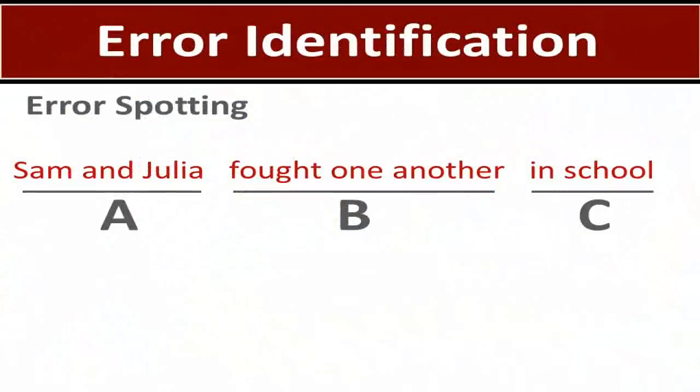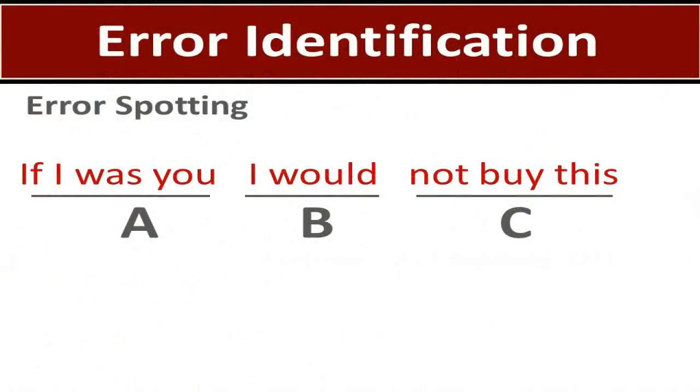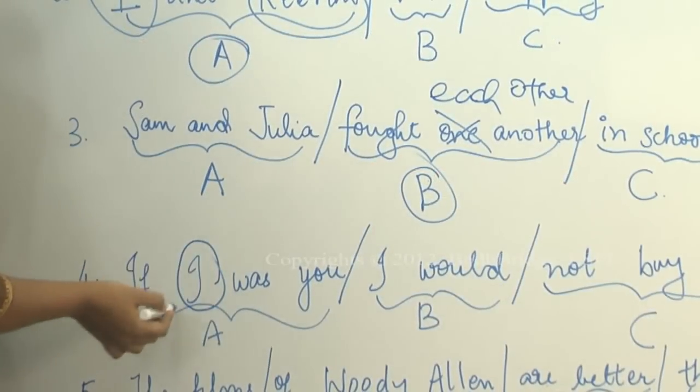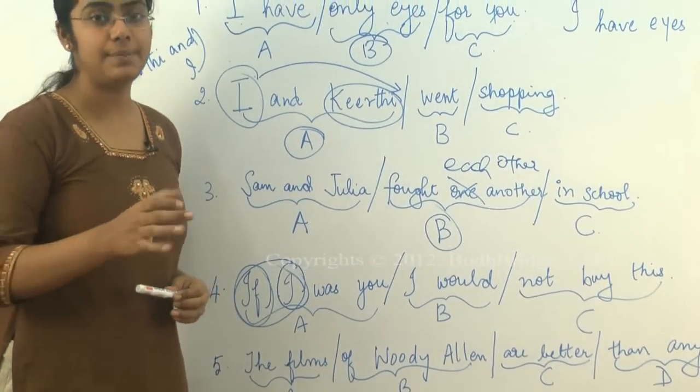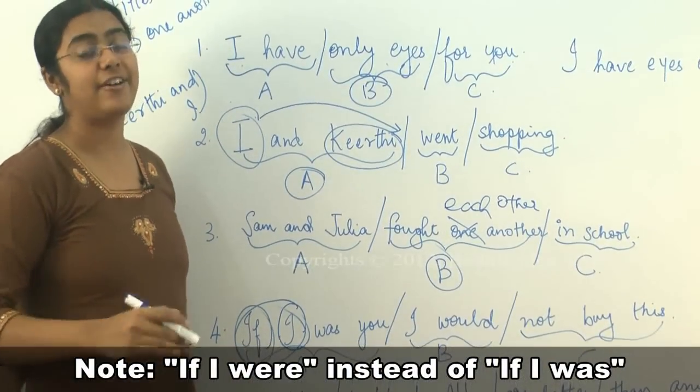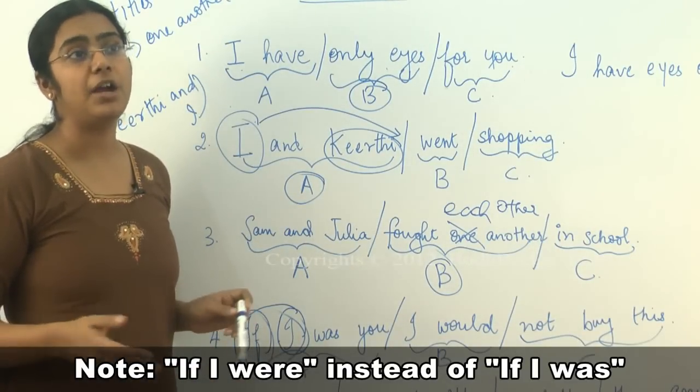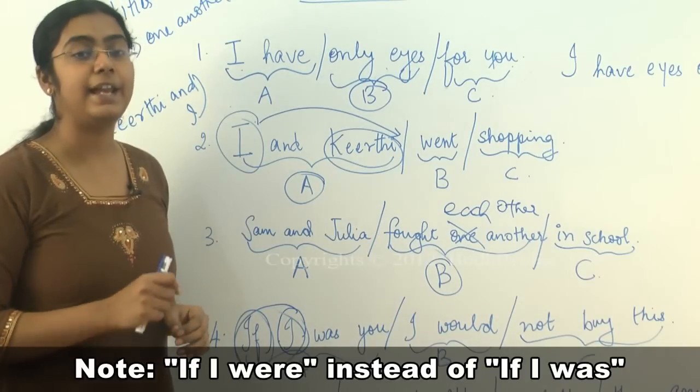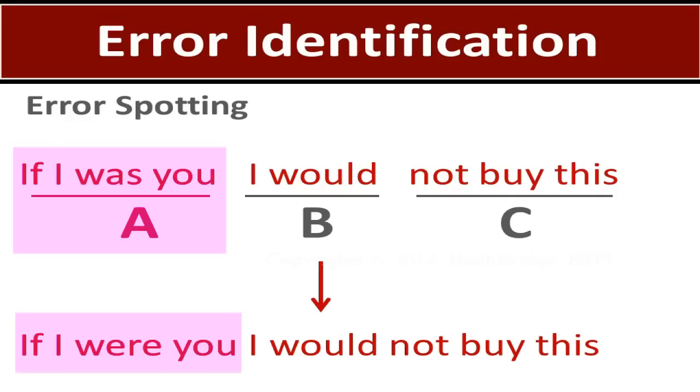So the correct form here would be Sam and Julia fought each other and not one another. Now, if I was you, I would not buy this. If you have if and I together and you are talking about a hypothetical condition here, remember it is never if I was, it's always if I were. If I were rich, I would tour the world. If I were smart, I would be in IIT Madras. It is always if I were and not if I was. So, the right sentence would be if I were you, I would not buy this.